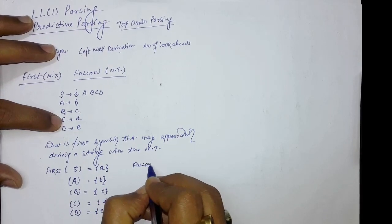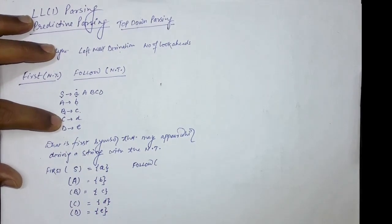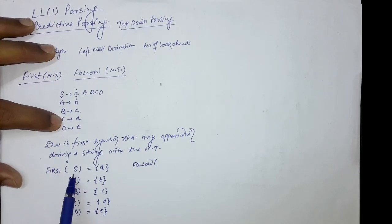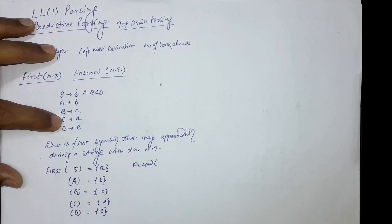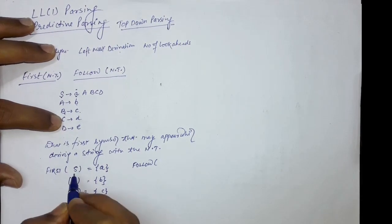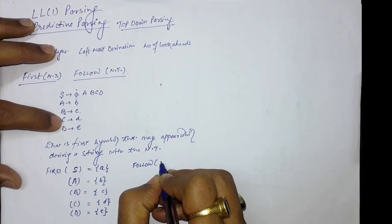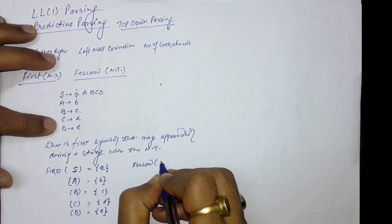Now let us compute FOLLOW. So what is FOLLOW? FOLLOW is also computed for all the non-terminal symbols. While doing the process of derivation, FOLLOW tells us which terminal symbol may come after a non-terminal. In FIRST, we computed which symbol comes first while deriving a string. But with FOLLOW, we are predicting what will come after a given non-terminal while doing the derivation.